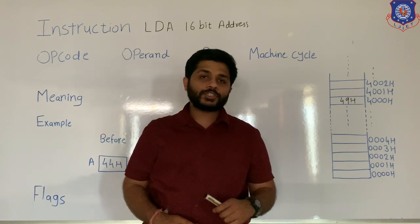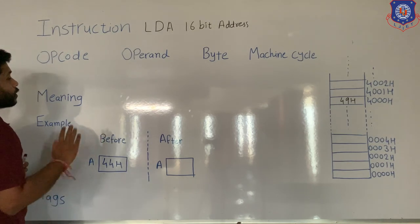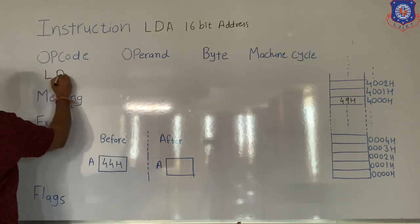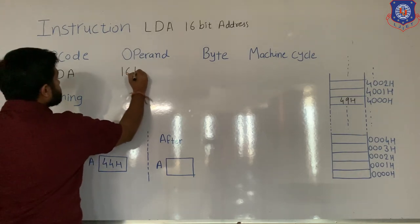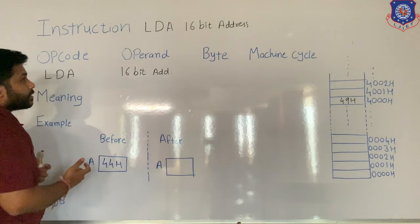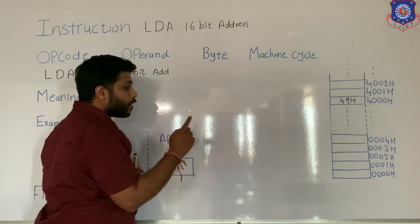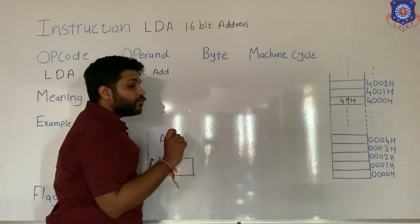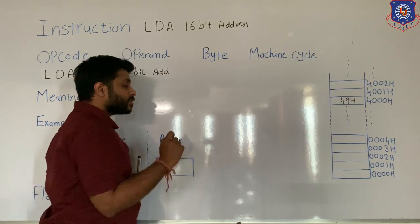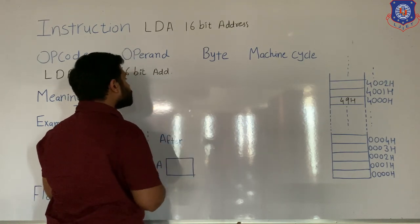Let's see the instruction LDA 16-bit address. For this instruction, the first part is known as opcode and the remaining part is known as operand. So in this instruction, the opcode is LDA and the operand is 16-bit address. The byte of the instruction means the size of that instruction. If 16-bit value is present, the instruction is of 3 bytes.